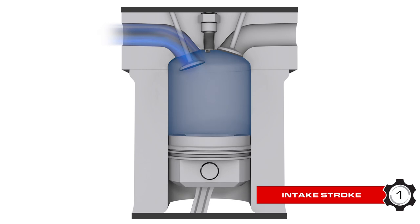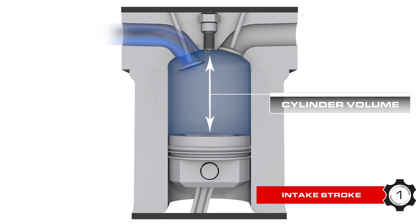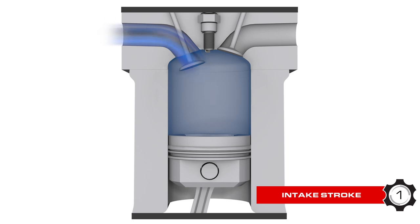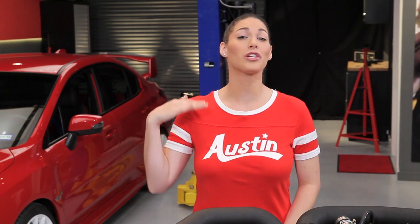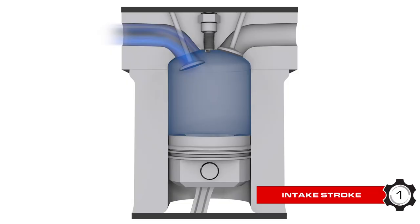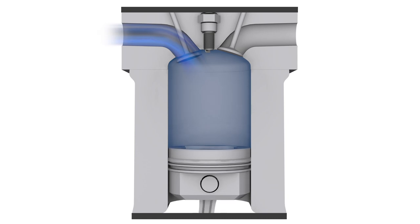As the piston begins traveling to the bottom of the cylinder, the intake valves open. Cylinder volume increases as the piston goes down, creating a vacuum which higher pressure air in the manifold moves to fill. This pressure differential is what brings the air-fuel mixture into the cylinder. Remember, air will always flow from higher pressure to lower pressure areas. As the intake stroke comes to an end, the intake valves start to shut.